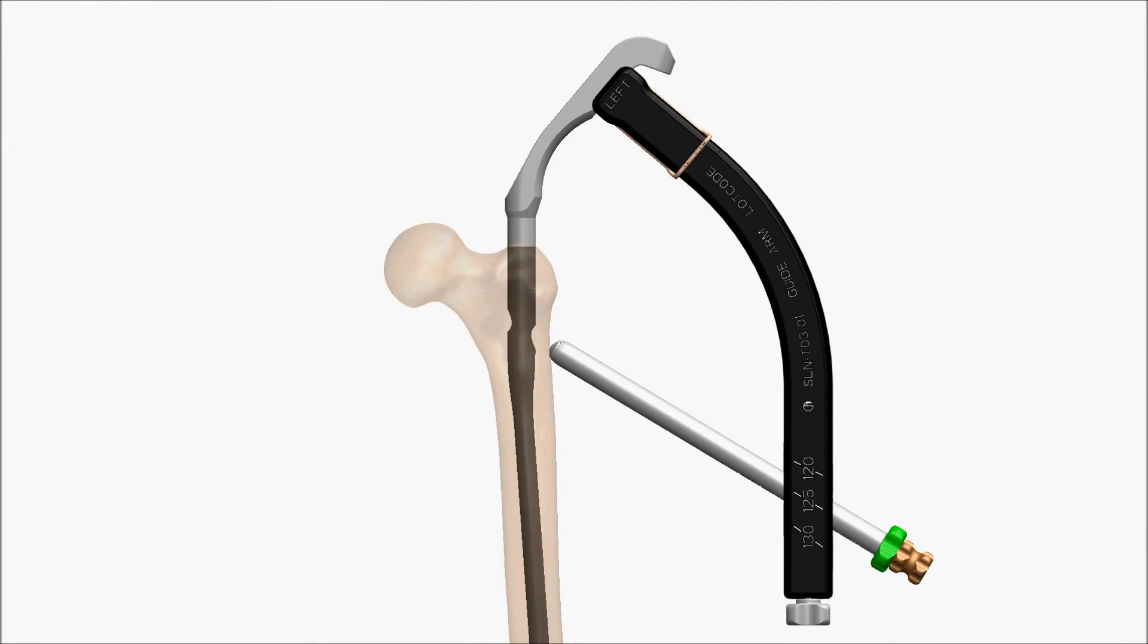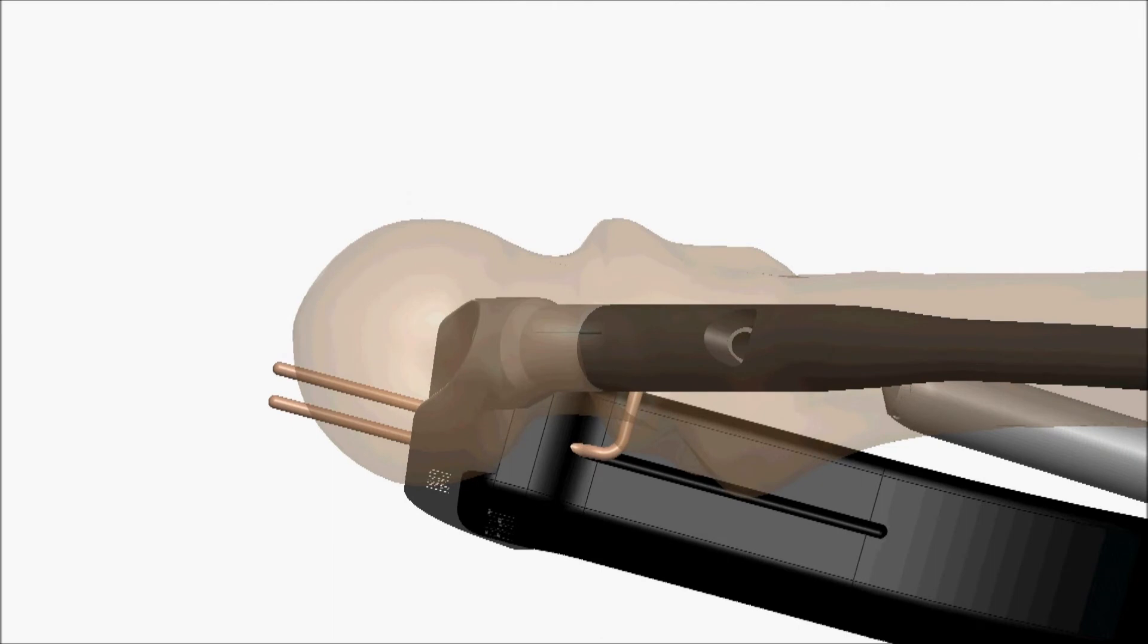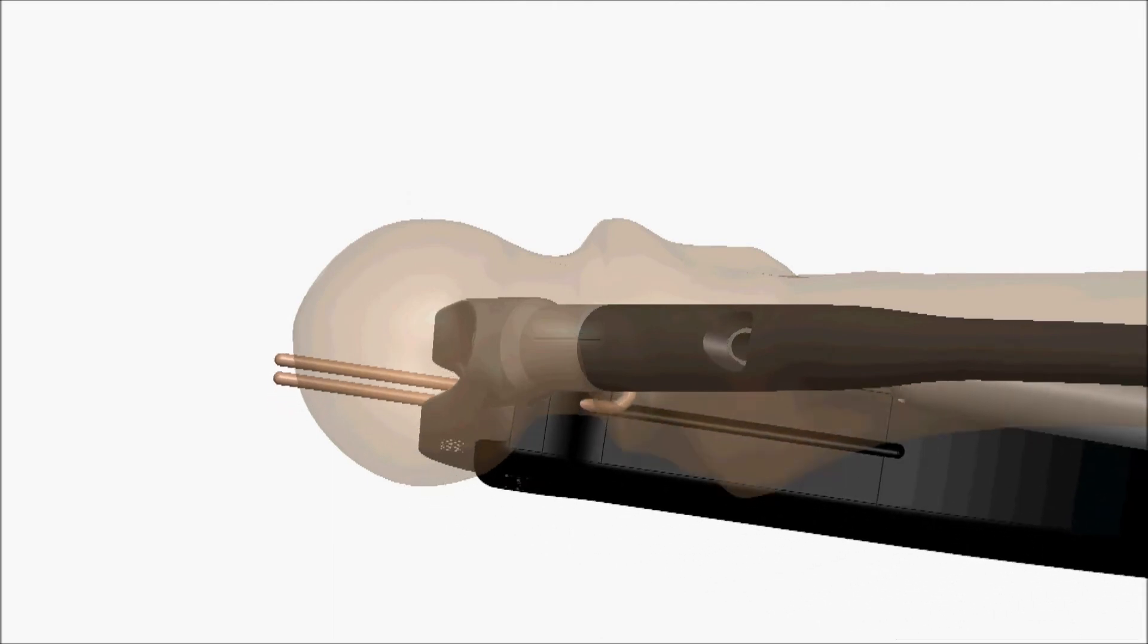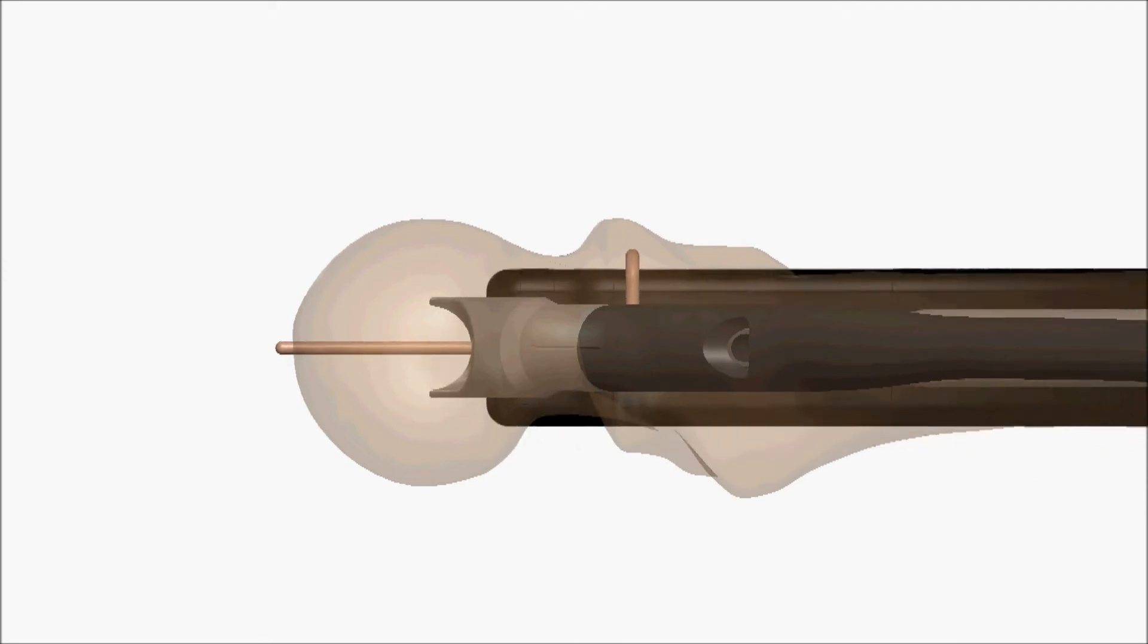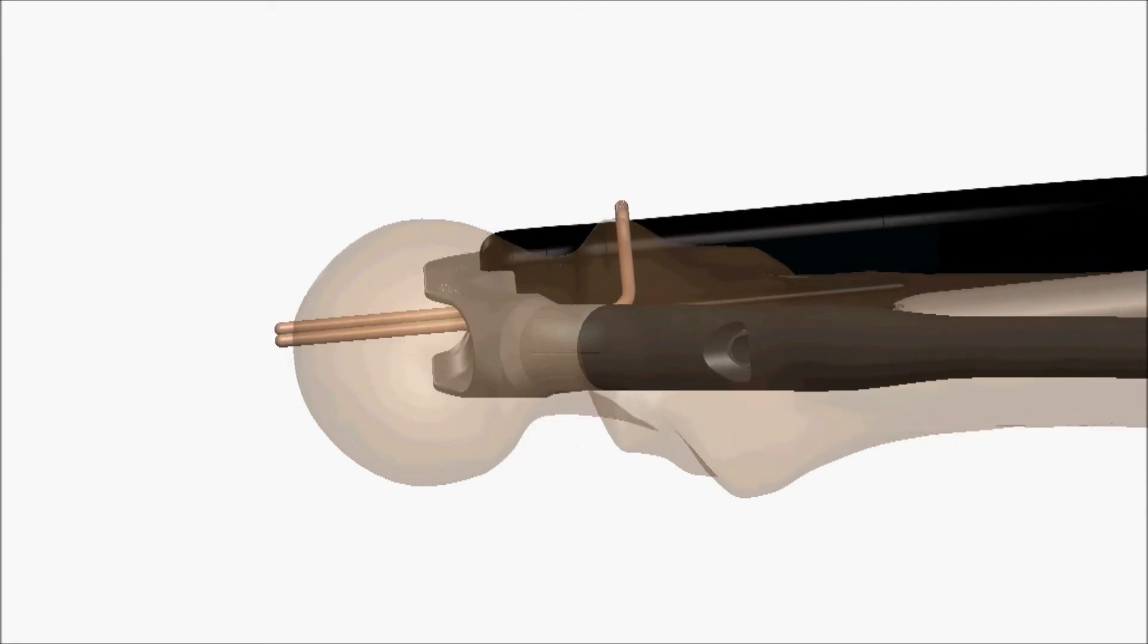Raise the goal posts and position the C-arm for a lateral view of the proximal femur. Once a good lateral of the proximal femur is obtained, rotate the guide arm until the two prongs of the goal posts overlap and are seen as one.